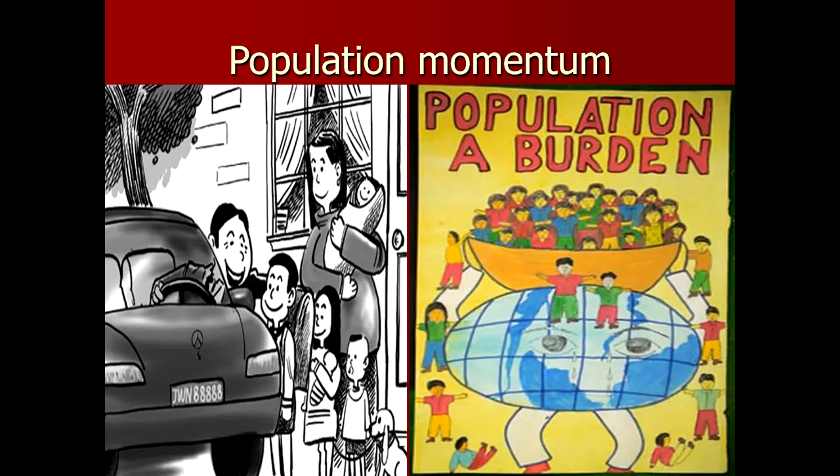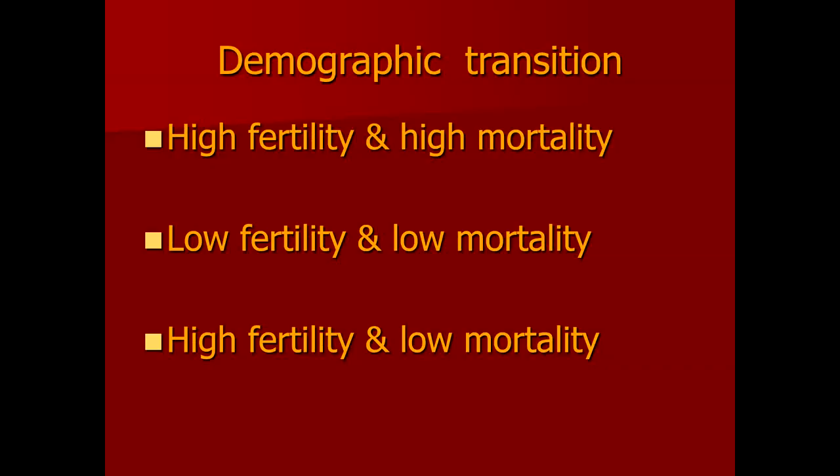Pakistani females are now producing around four children, but even if fertility is brought down to replacement level fertility of two, the population will continue to grow for the next 30 years because the mass in the reproductive age group is so large that population momentum cannot be controlled.